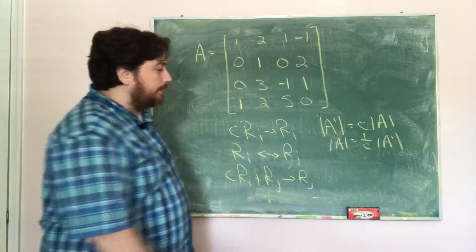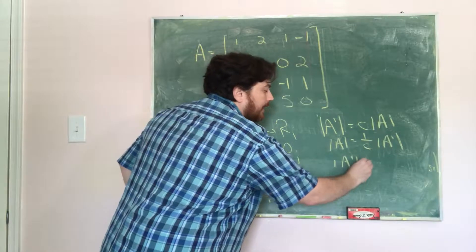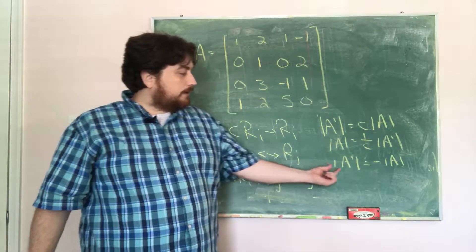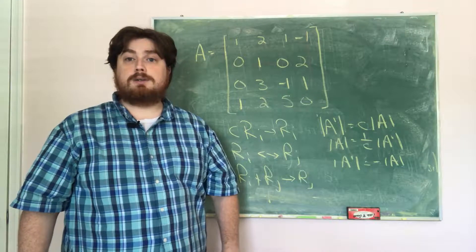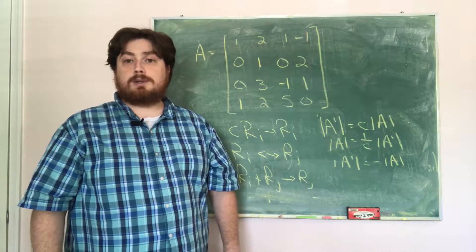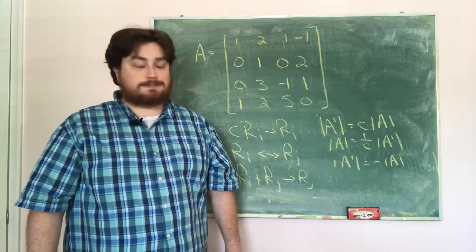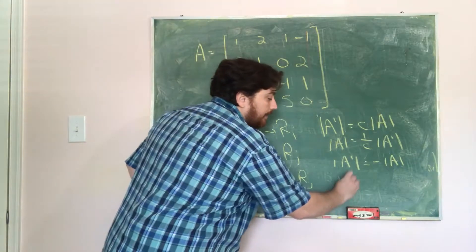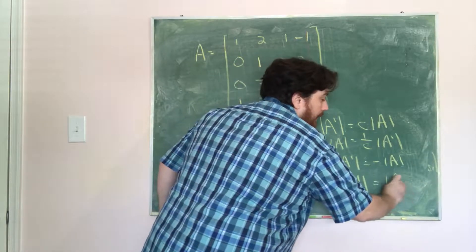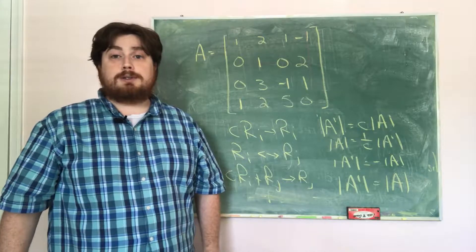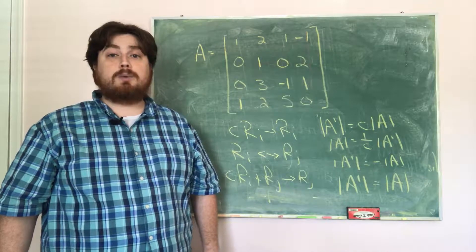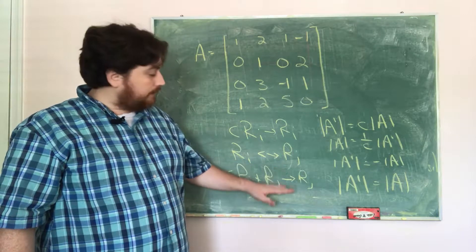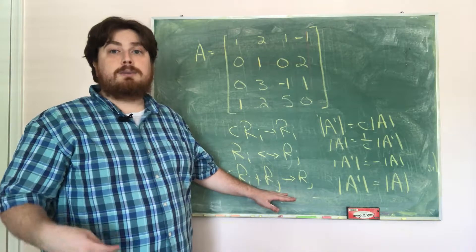If we interchange two rows, the new matrix will have the negative determinant of the old matrix — interchanging two rows changes the determinant by multiplying by negative one. And if we take a constant times one row, add it to another row, and replace that row, the determinant will actually be unchanged. The resulting matrix will have exactly the same determinant as the original. So as we do row operations, we only need to track changes from the first two types.